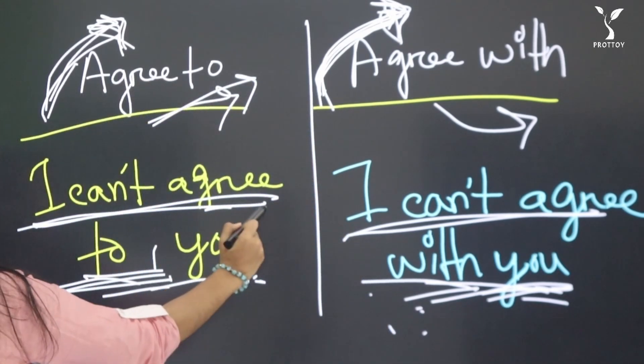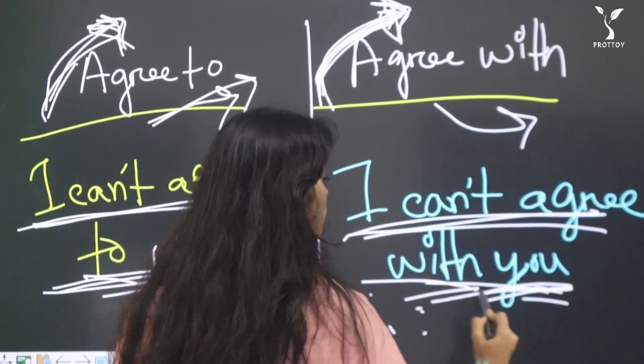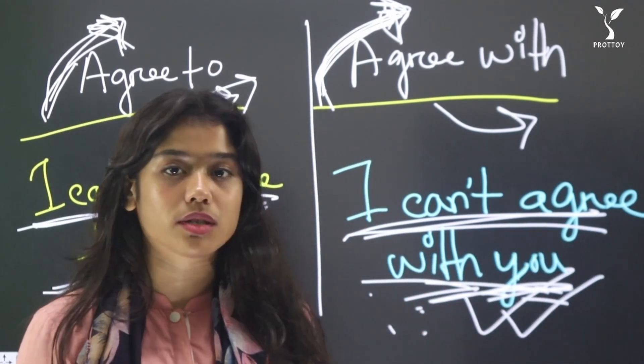For example, I can't agree to you and I can't agree with you. This is the correct answer because you is a person.